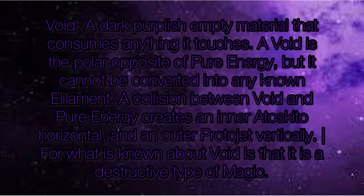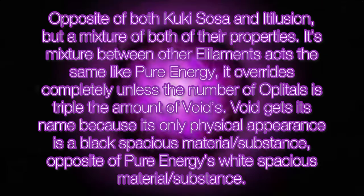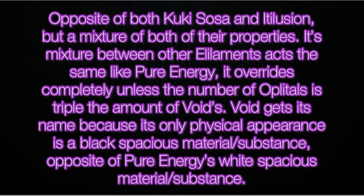Fukashi vision can be powered up quite faster than fukashi, as nanoparticles are constantly emitted by adagia. Void is a dark purplish empty material that consumes anything it touches. Void is the polar opposite of pure energy but cannot be converted into any known element. A collision between void and pure energy creates an inner atasakito horizontally and an outer proto-jet vertically. Void is a destructive type of magic, the opposite of both kukisosa and illusion, but a mixture of both their properties. Its mixture with other elements acts the same as pure energy — it overrides completely unless the number of oplotals is triple the amount of the void's. Void gets its name because its only physical appearance is a black spacious material substance, opposite of pure energy's white spacious material substance.